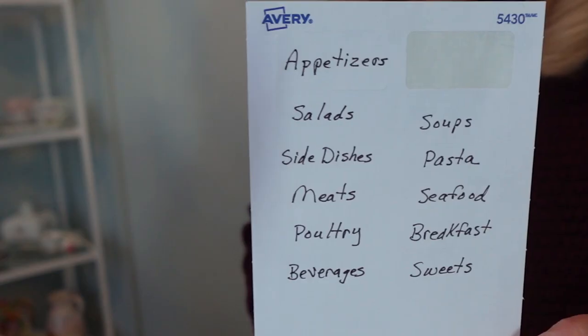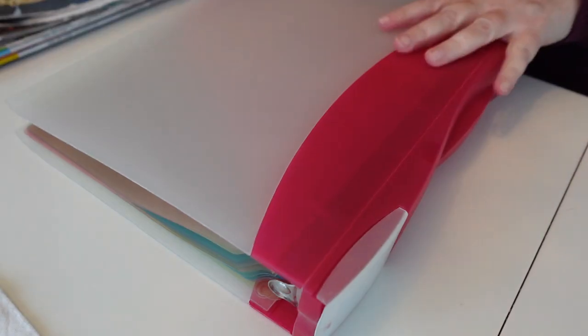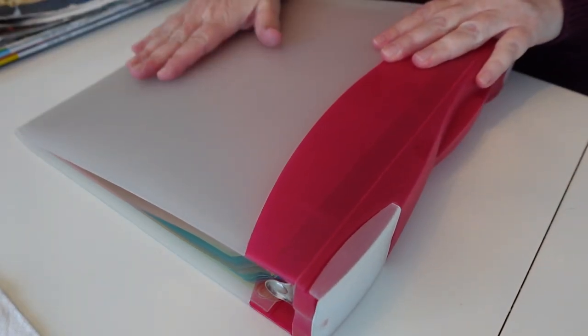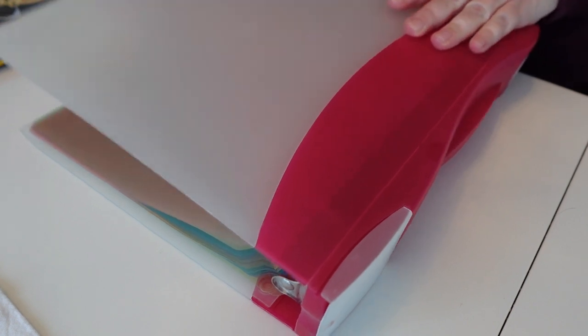If I need to add another category, I think I have one or two extra pockets. So here are the completed labels. And now I'm going to attach them to each of the dividers.